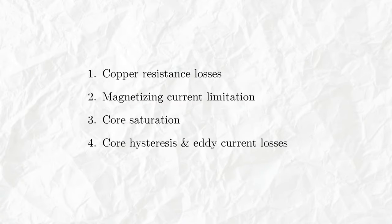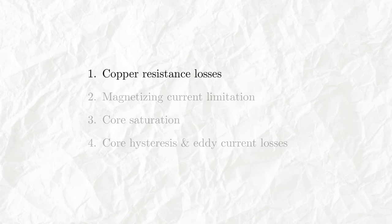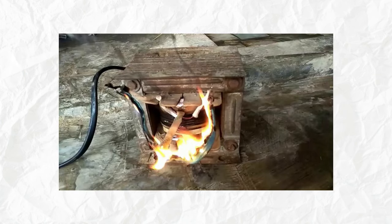So there are four basic things that we have to be careful about while designing a transformer. The first one is the loss in the wires due to resistivity of the copper or the conductor that you're using. Essentially here the point is that we have to have the proper cross section to avoid too much loss in the copper.